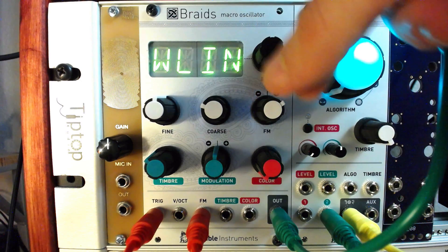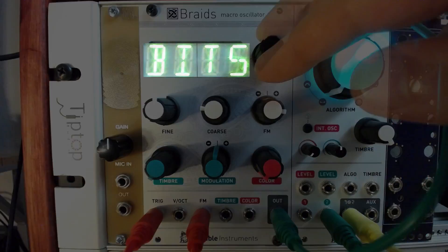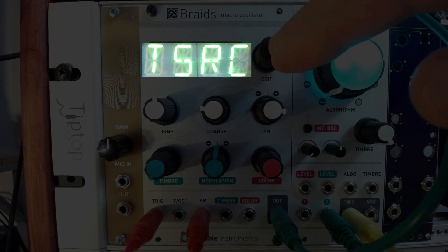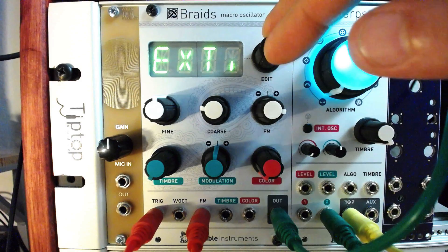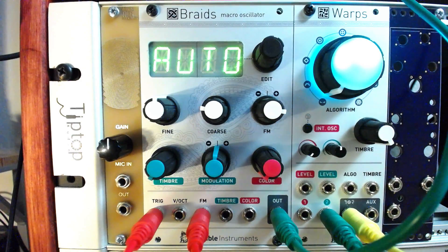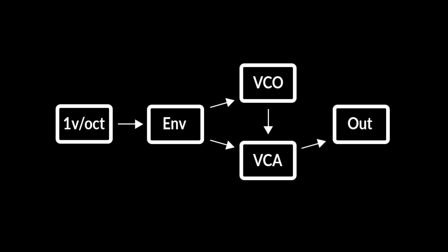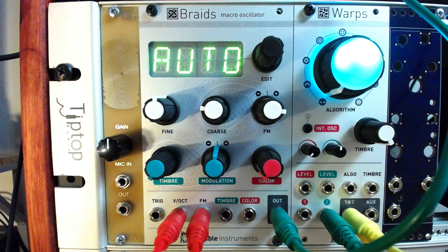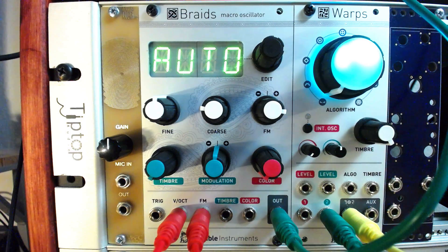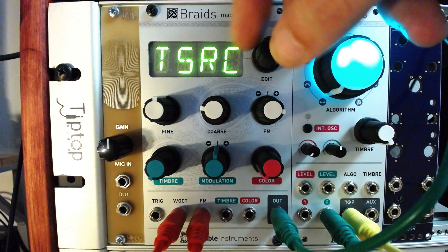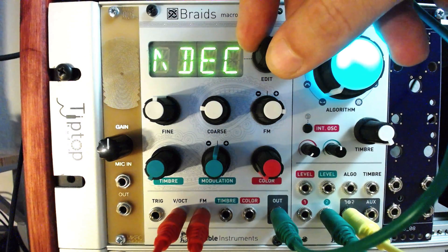We can also send note sequences to Braids to create more dynamic patterns. If we back out to the main menu and scroll back to the trigger source page, we can set the source to auto. Braids can track changes in voltage to the 1 volt per octave pitch input and use these changes to trigger the envelope. Using this mode, we can send a sequence to the pitch input and each note will trigger the envelope, without the need for the trigger input.